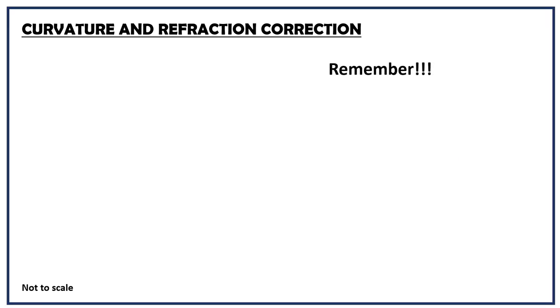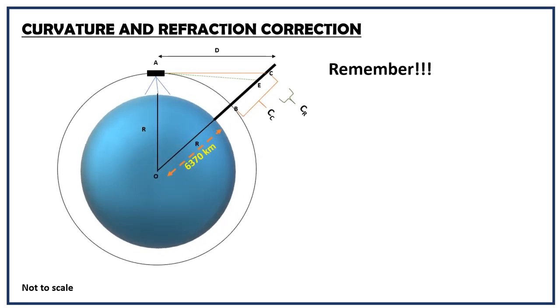If you feel these numbers and units are confusing, I suggest you to remember this concept with figure. And finally, CC is equal to D square by 2R. CR is 1/7th of CC. Actual staff reading can be calculated as observed staff reading plus CR minus CC.